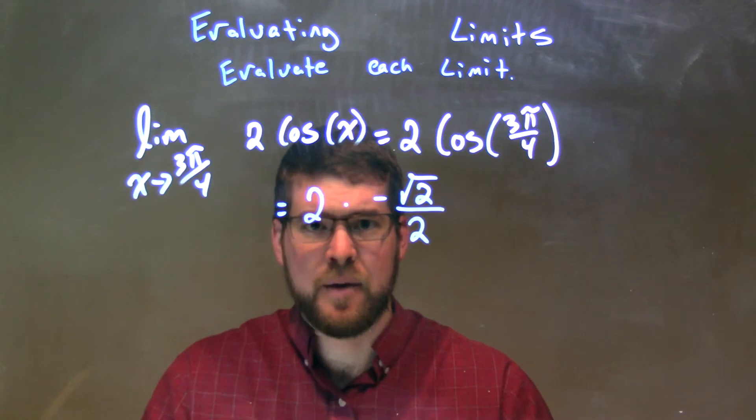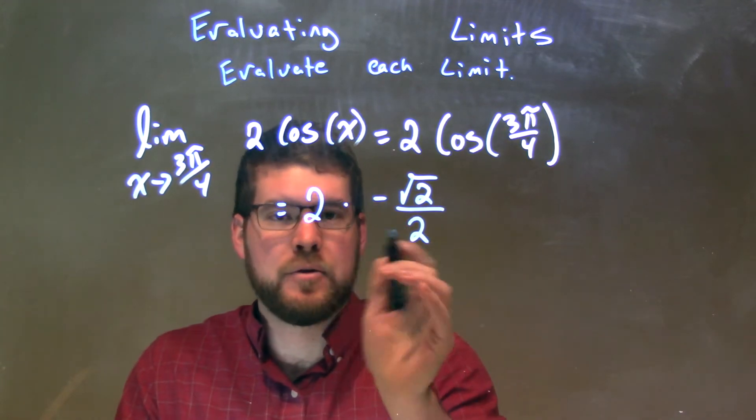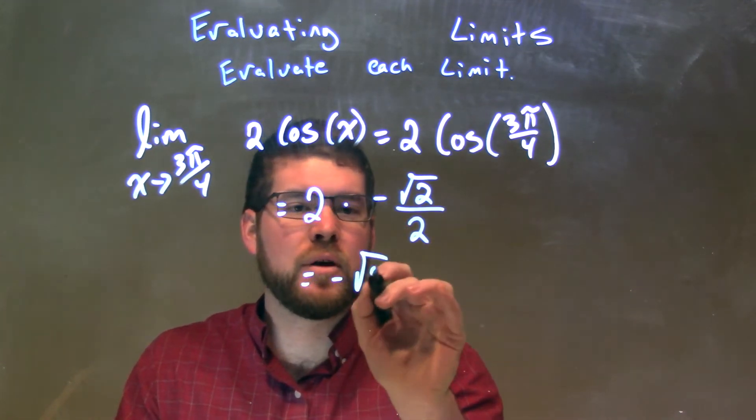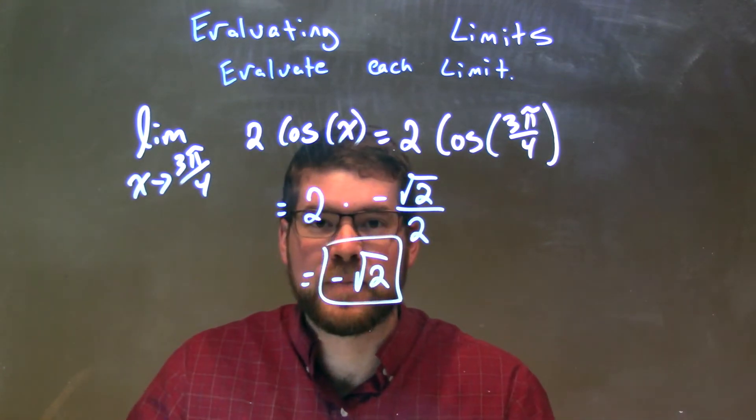Well, this becomes fairly simple now. 2 and 2 will cancel, right? 2 by 2 is 1, so we have negative square root of 2, and that is just our final answer.